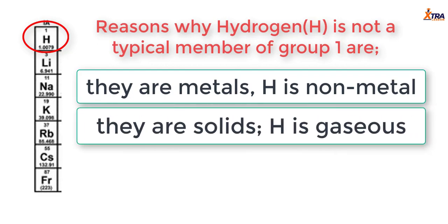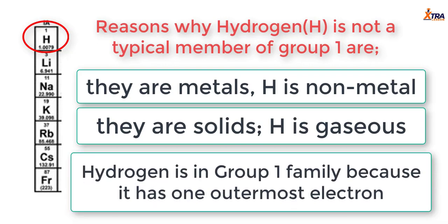Group 1 elements are solids, but hydrogen is not a solid — it is gaseous. The fact that group 1 elements are solids means they have density, they have their shape, and several other factors which hydrogen does not have. Hydrogen is placed in group 1 simply because, just like every other member of group 1, it has one outermost electron, and for that reason it is put there for simplicity.